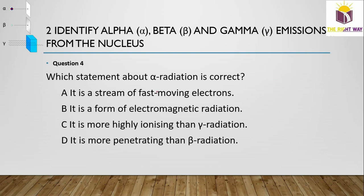Question 4: Which statement about alpha radiation is correct? Option A says it is a stream of fast-moving electrons — that describes beta particles, not alpha. Option B says it is electromagnetic radiation — that describes gamma particles. Option C says it is more highly ionizing than gamma radiation — yes, alpha is the most highly ionizing. Option D says it is more penetrating than beta — no, alpha is less penetrating than beta and cannot pass through paper.